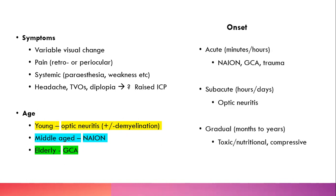Onset is also important. NAION and GCA tend to present acutely — minutes to hours. Trauma should be obvious in the history. If you have fairly fast progression, think NAION and GCA. If it's subacute — more like hours to days — that fits more with optic neuritis in a younger patient. A 25-year-old with visual change over days makes you think optic neuritis. More gradual onset over months to years suggests toxic/nutritional causes such as lack of B12, folate, or excess alcohol, or a tumour compressing the optic nerve.